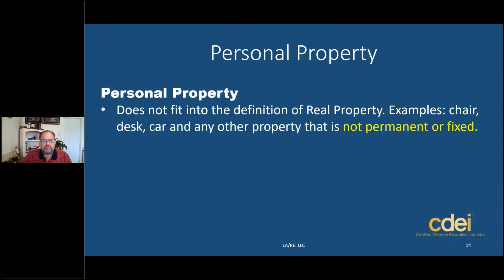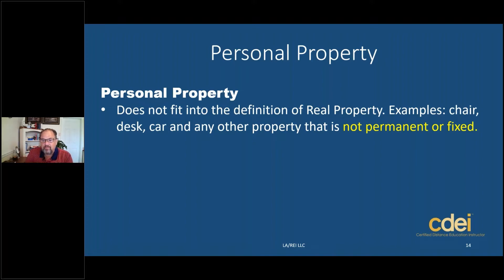Personal property is defined as anything that doesn't fit into the definition of real property. Real property you can't move — a house, a fence, a barn, trees. It's permanent. Personal property, on the other hand, can be moved. So furniture, a sofa, a refrigerator, a bedroom set, any other thing that can be moved is personal property.